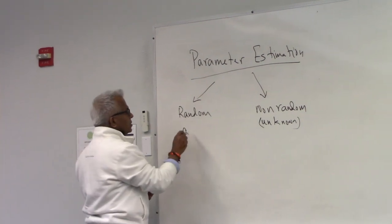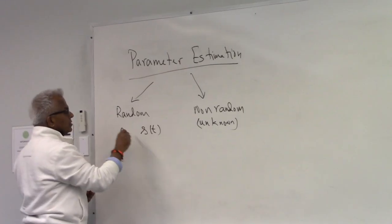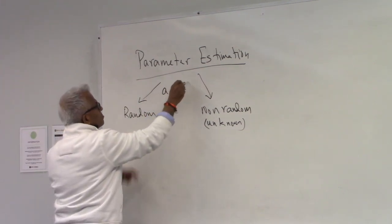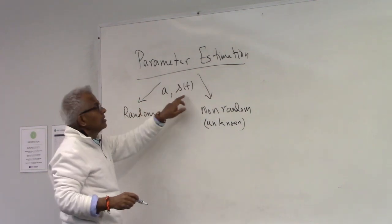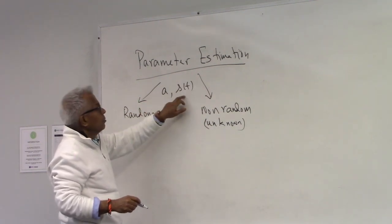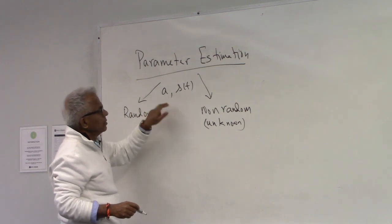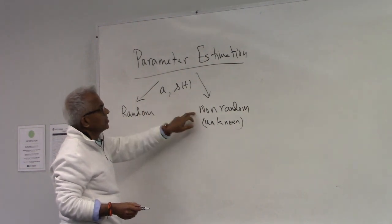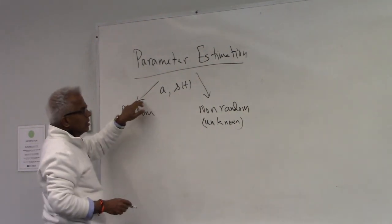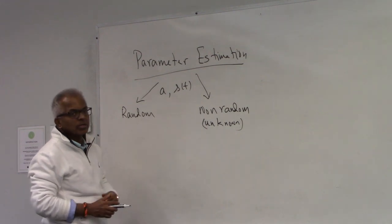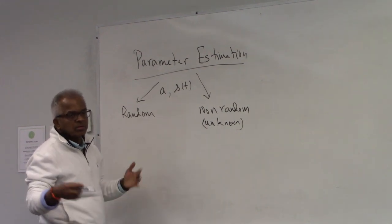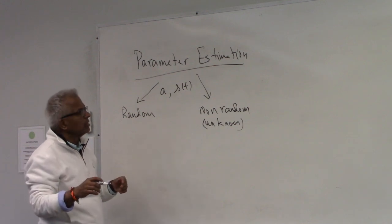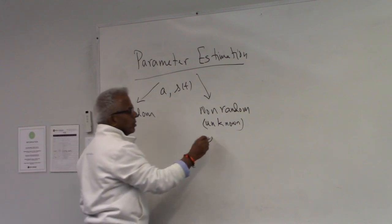Instead of a parameter, we may have a waveform itself as the unknown. In both cases, the unknowns could be a time-dependent function or not time-dependent, and both could be random — that would be a stochastic process — or it could be just a random variable. Here, it is an unknown waveform: somebody is transmitting a waveform, there is nothing random about it, we just don't know what it is. This is a classic problem.